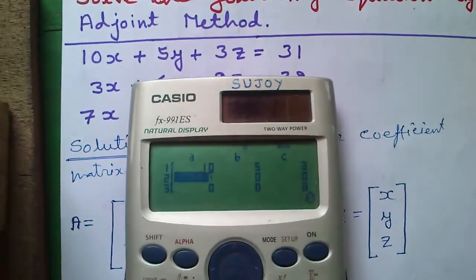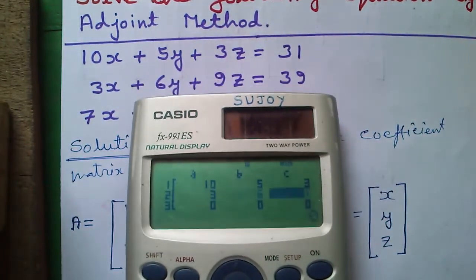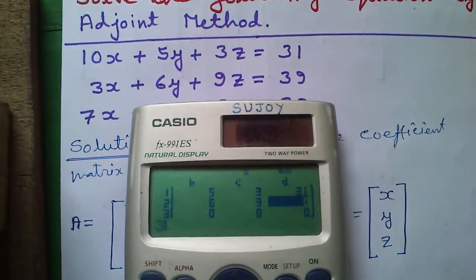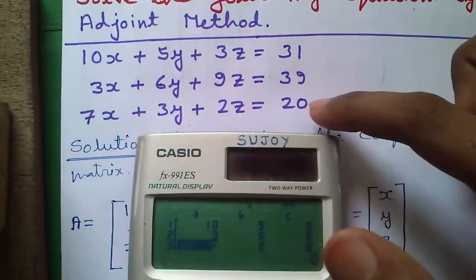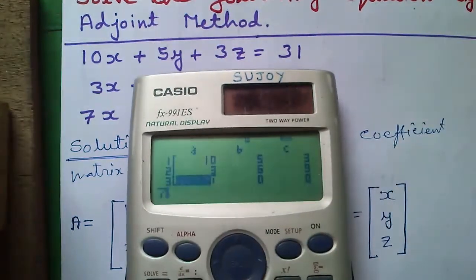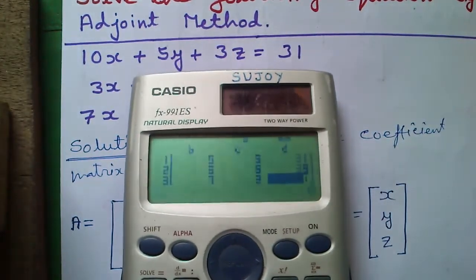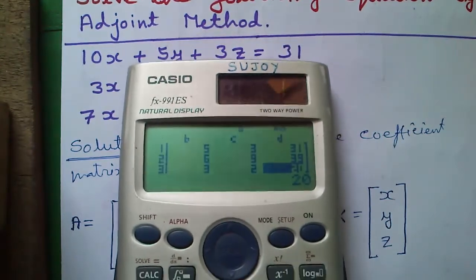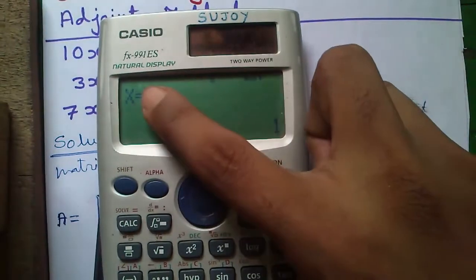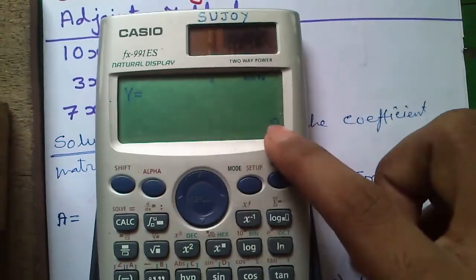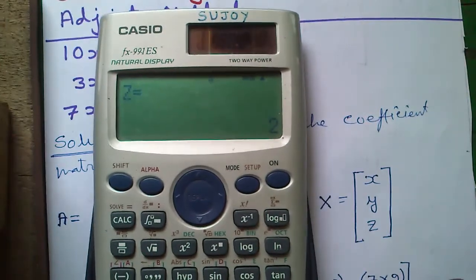Continue entering: 3, 6, 9, 39 for the second equation, then 7, 3, 2, 20 for the third equation. Then just press the equals button and it will give you X = 1, Y = 3, Z = 2. Isn't it cool?